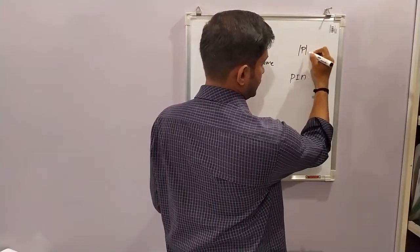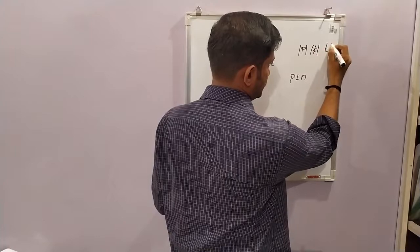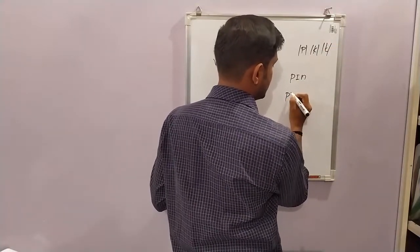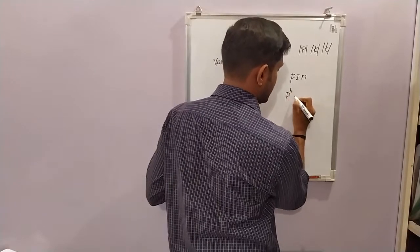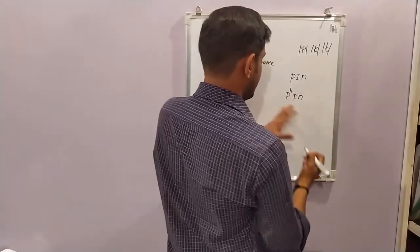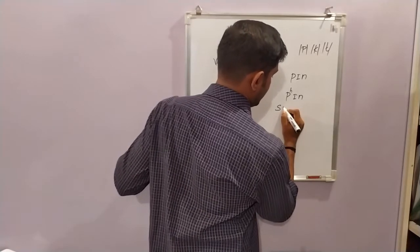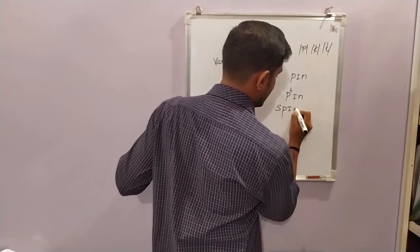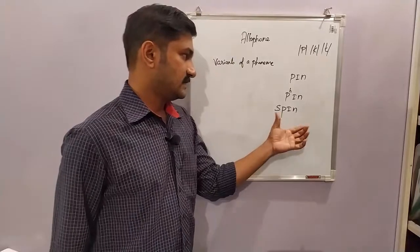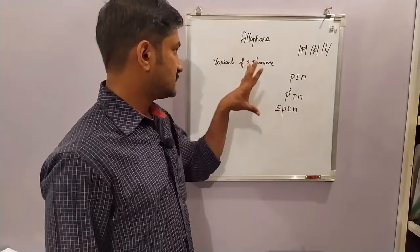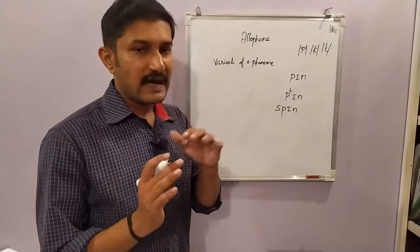If it comes after an /s/ sound or some other phoneme, that aspiration will not be there. For example, 'pin' versus 'spin'. This is what is meant by allophone. Allophone refers to the positional variance of a phoneme - it depends on the context in which that phoneme is occurring.